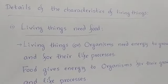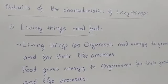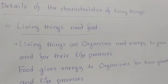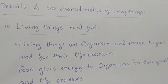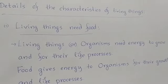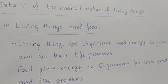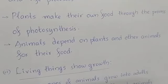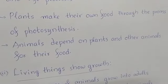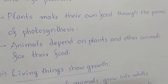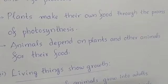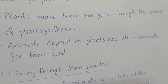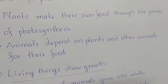Let us discuss in detail about all these characteristics. First, living things need food. Organisms need energy to grow and for their other life processes, and this energy comes from food. Food gives energy to organisms for their growth and life processes. Plants make their own food through the process of photosynthesis — they make their own food from natural resources. Whereas animals depend on plants and other animals for their food.